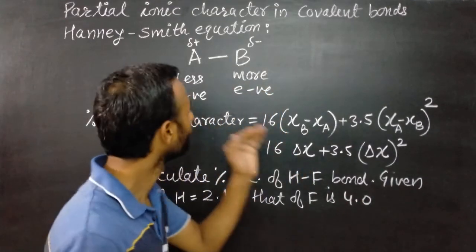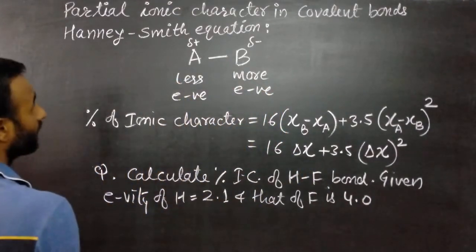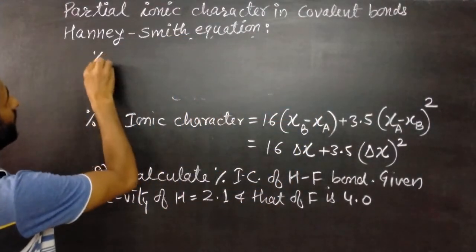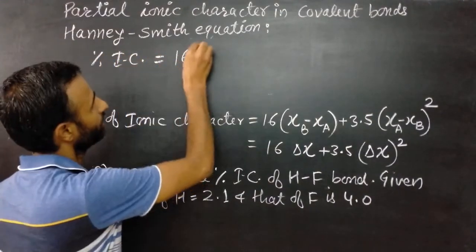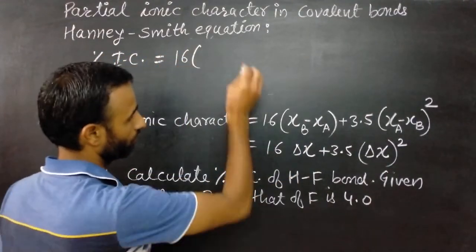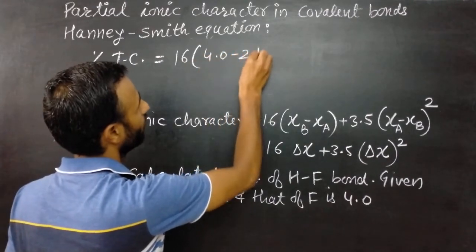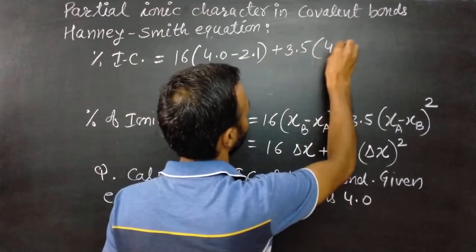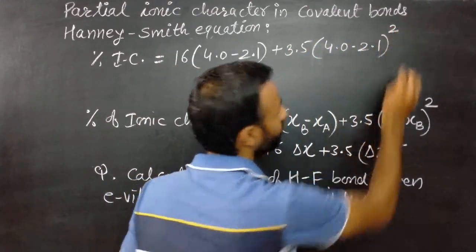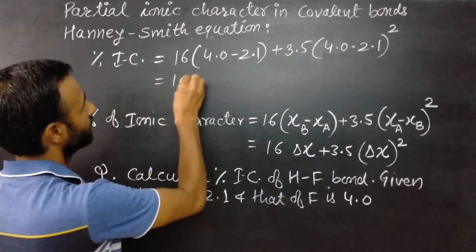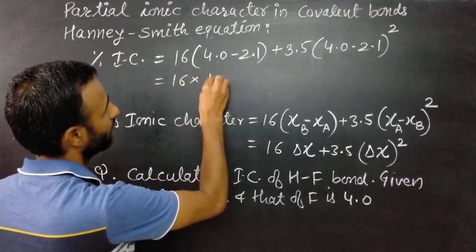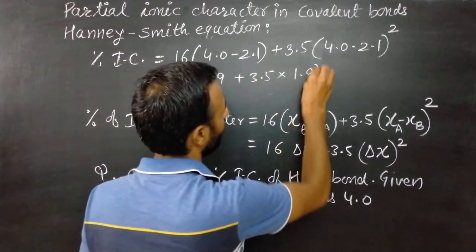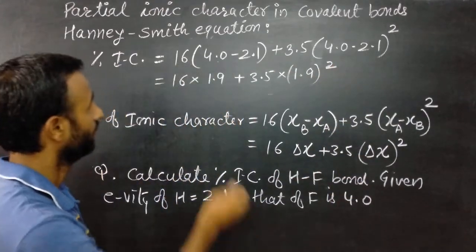Now to calculate percentage of ionic character, we use this formula. That is, percentage of ionic character is equal to 16 times (4.0 - 2.1) plus 3.5 times (4.0 - 2.1) squared. That is, 16 times 1.9 plus 3.5 times 1.9 whole squared.